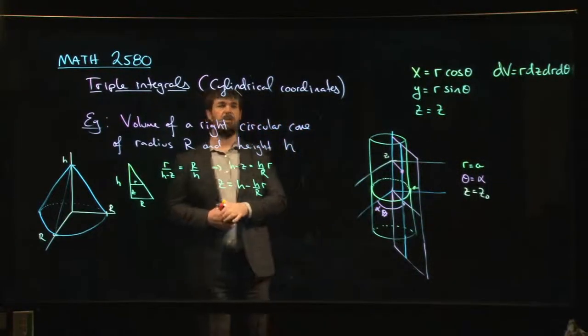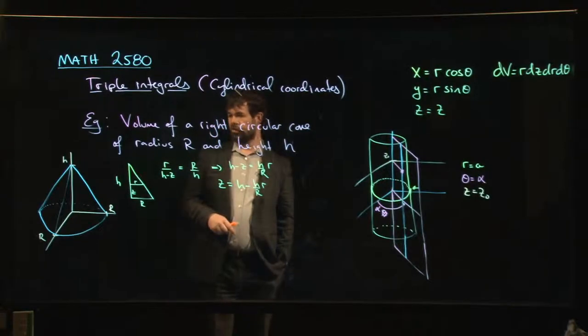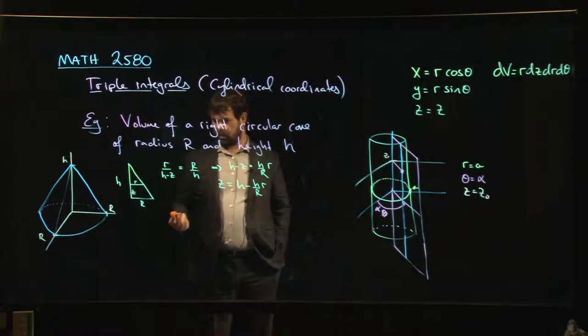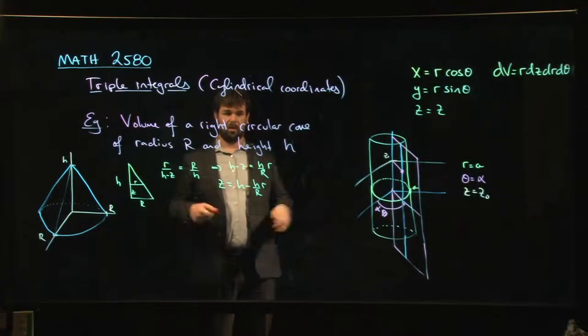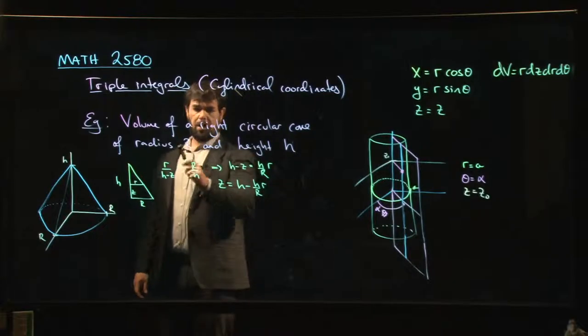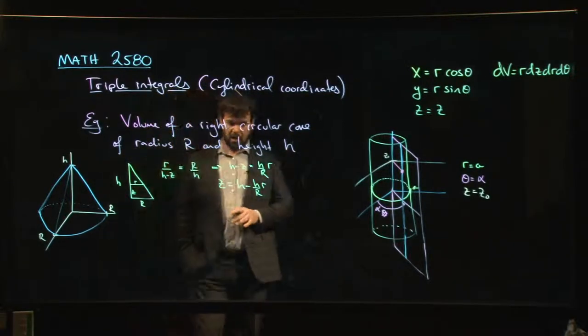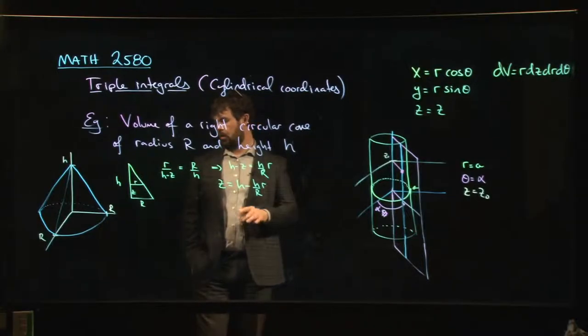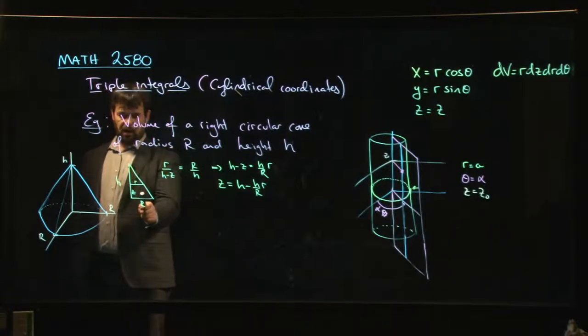Here's a quick example showing the use of cylindrical coordinates to solve a reasonably classic problem: finding the formula for the volume of a right circular cone with radius capital R and height H. I've done a bit of this setup ahead of time just to keep this video a reasonable length.